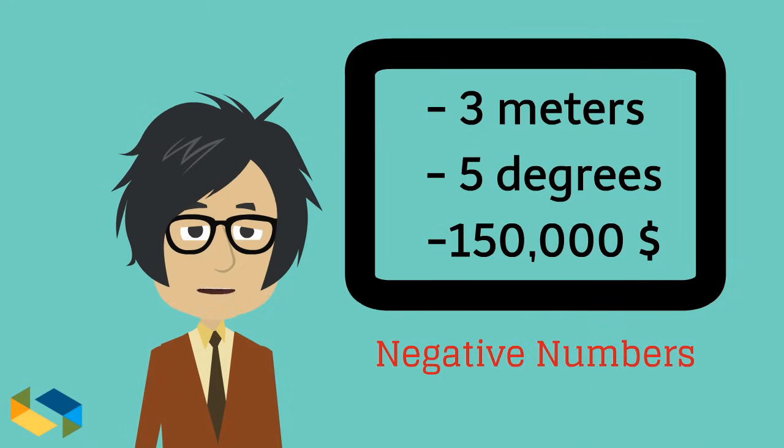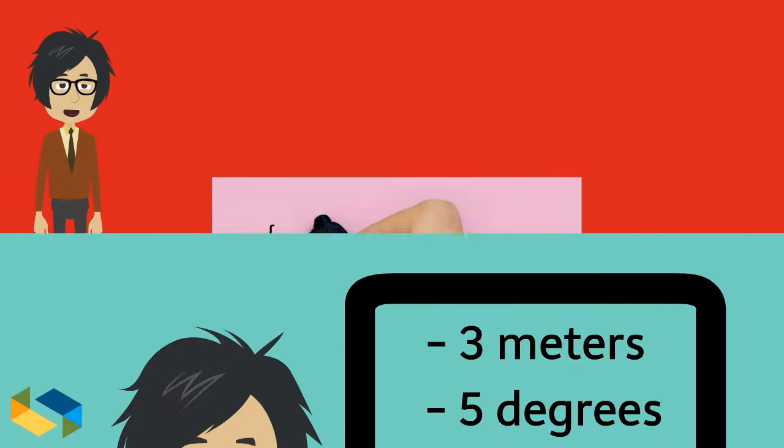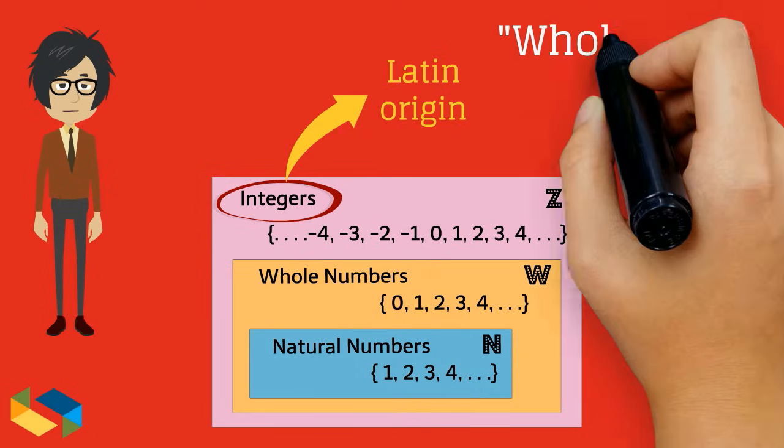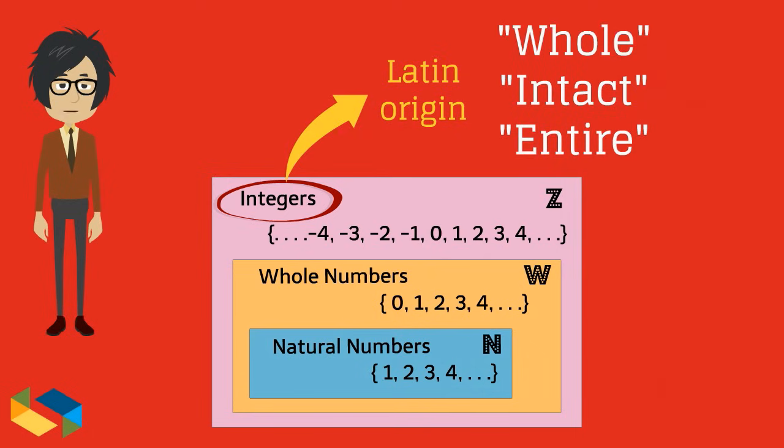In all such cases, the numbers are called negative numbers, which when clubbed together with the whole numbers, form a new group called integers, strangely denoted by the letter Z. The term integer is derived from Latin word that means whole, intact or entire.